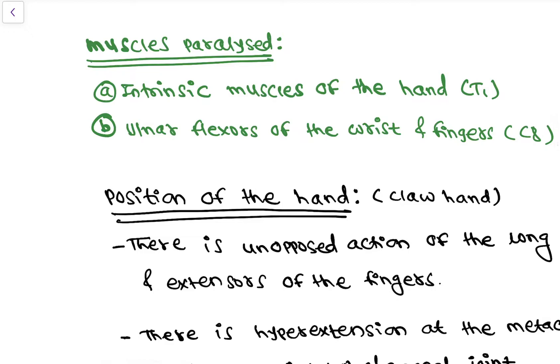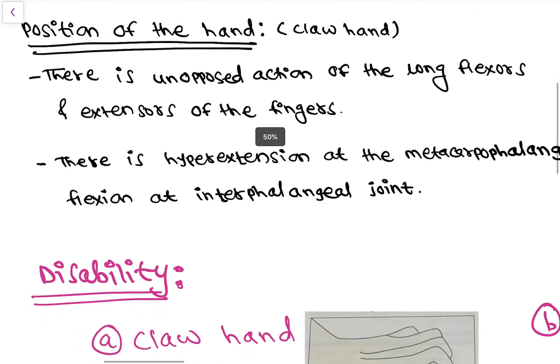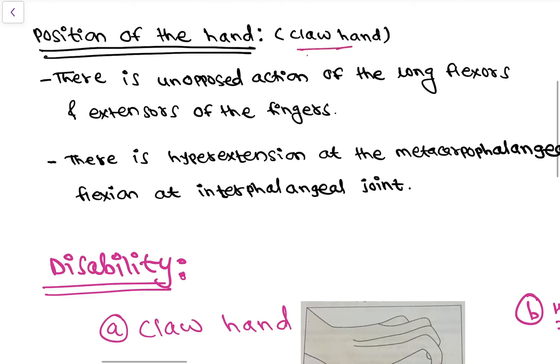Now the muscles paralyzed are the intrinsic muscles of the hand which are supplied by T1, and ulnar flexors of the wrist and fingers supplied by C8. Now we will learn about the position of the hand, also called claw hand.